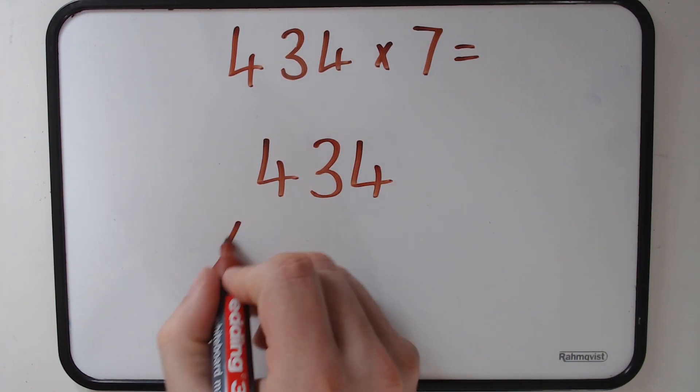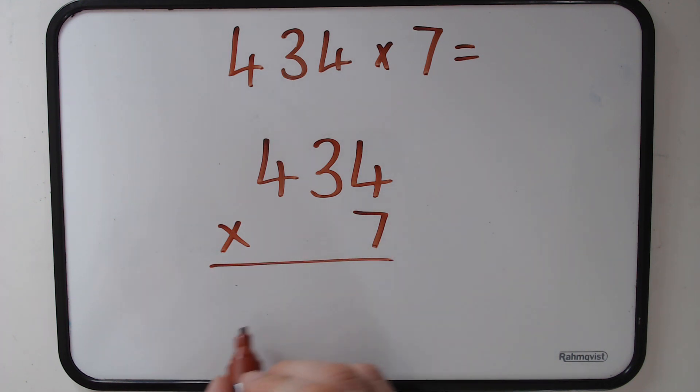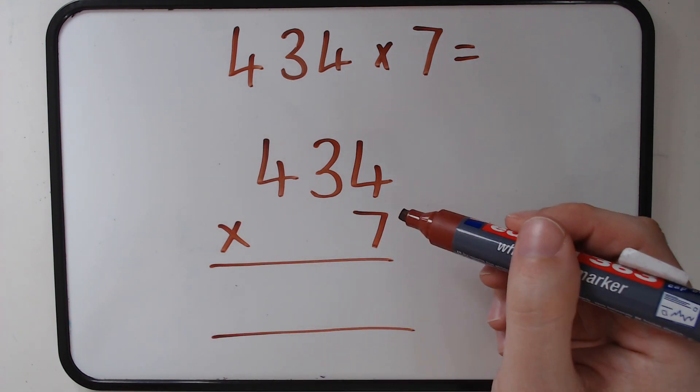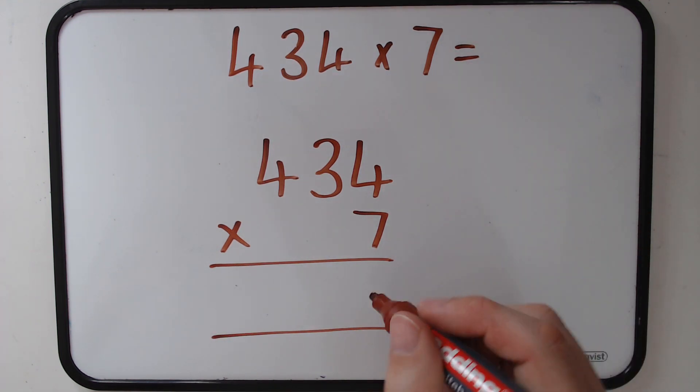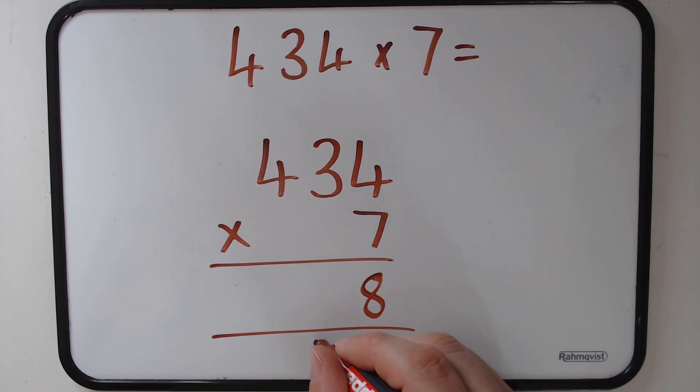So 434 times by 7, we have our answer box underneath. Start with the ones: 7 lots of 4, 7 times 4 is 28, so 8 goes in the ones, 2 goes into our tens column.